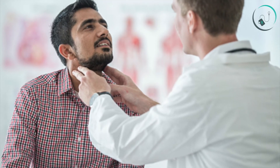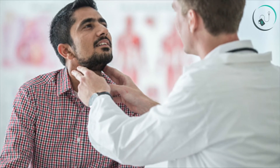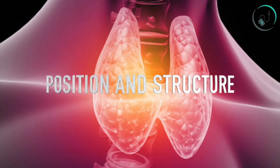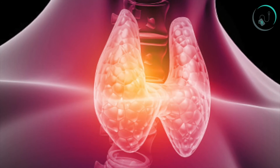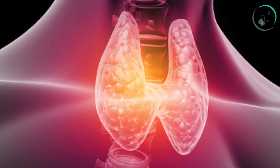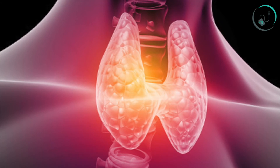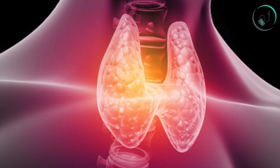The pituitary and the hypothalamus glands control the secretion of the gland. Position and Structure: The thyroid gland is located just below Adam's apple at the front of the neck. It is butterfly-shaped and consists of two lobes located on either side of the trachea.